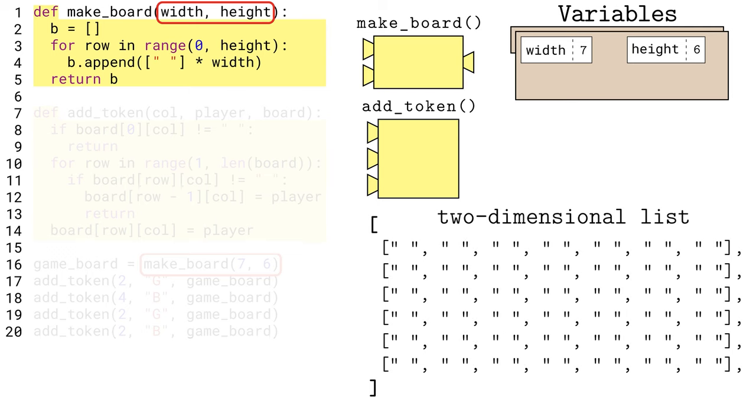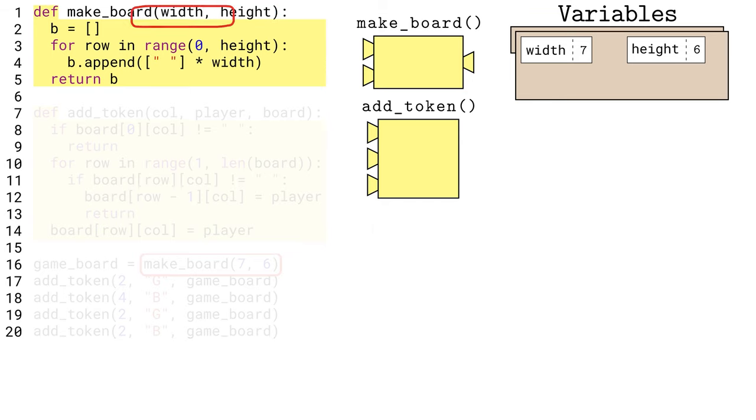The board will be a two-dimensional list, that is, a list containing other lists, which contain strings representing the pieces of the game. To make a two-dimensional list, we start with a normal empty list on line 2, using a pair of empty square brackets, and save it to a variable b, short for board.